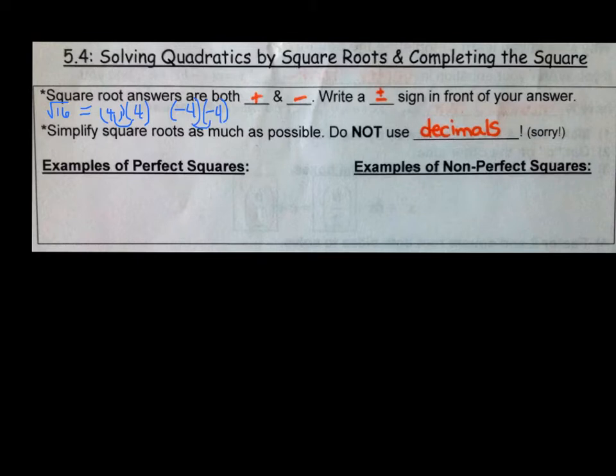So when we simplify, we have to do as much as we possibly can. We are not going to use decimals for our answers, so if something's not a perfect square, you're going to want to factor tree it.